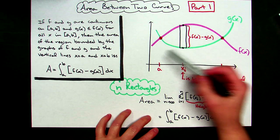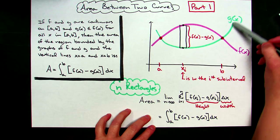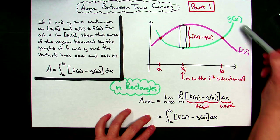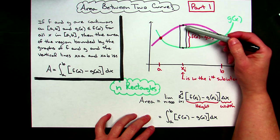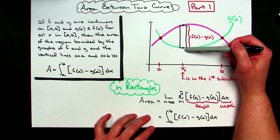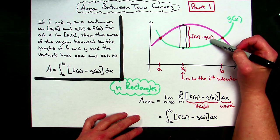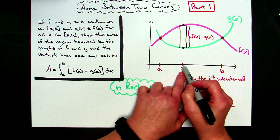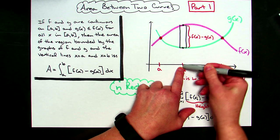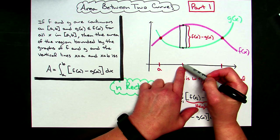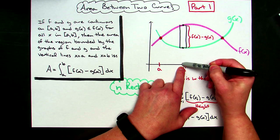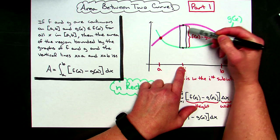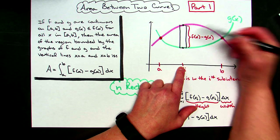I've got a curve f of x drawn and a curve g of x drawn, and this is going to be my representative rectangle. Each of these curves — g of x and f of x — are in terms of x. The height of that rectangle is f of x minus g of x. If I pick some x value and plug it into the f function, it gives me the distance all the way up to the f curve. If I plug that same number into the g function, it gives me the distance up to the g curve. The entire distance minus that part gives me the height of the rectangle — that's your f of x minus g of x.